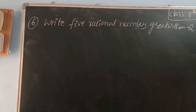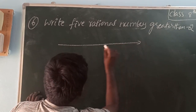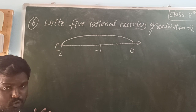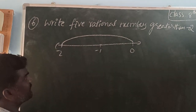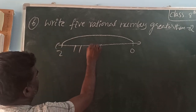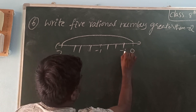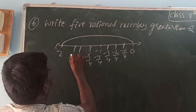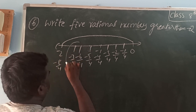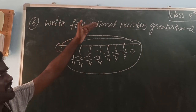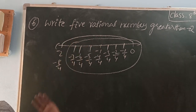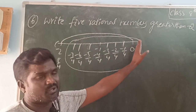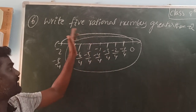Write 5 rational numbers greater than minus 2. On the number line, minus 2 is marked with minus 1 and 0 to its right. All numbers to the right of minus 2 are greater. We can divide into 4 parts, giving minus 1 by 4, minus 2 by 4, minus 3 by 4, minus 4 by 4, minus 5 by 4, minus 6 by 4, minus 7 by 4, minus 8 by 4. The negative integer nearest to 0 is the biggest. These 5 rational numbers are all greater than minus 2.